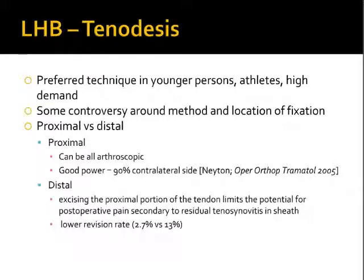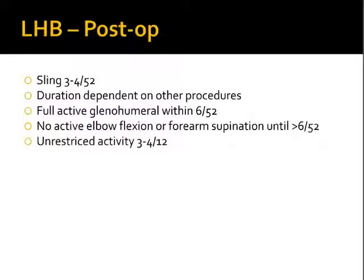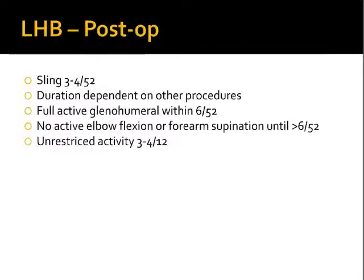Post-operative management involves placing patients in a sling for three to four weeks, with the duration of immobilization depending on any other procedures or shoulder pathology addressed. Patients can have full active glenohumeral motion within six weeks, but should avoid active elbow flexion or forearm supination — both of which activate the biceps — until after six weeks. They can return to unrestricted activity in three to four months.